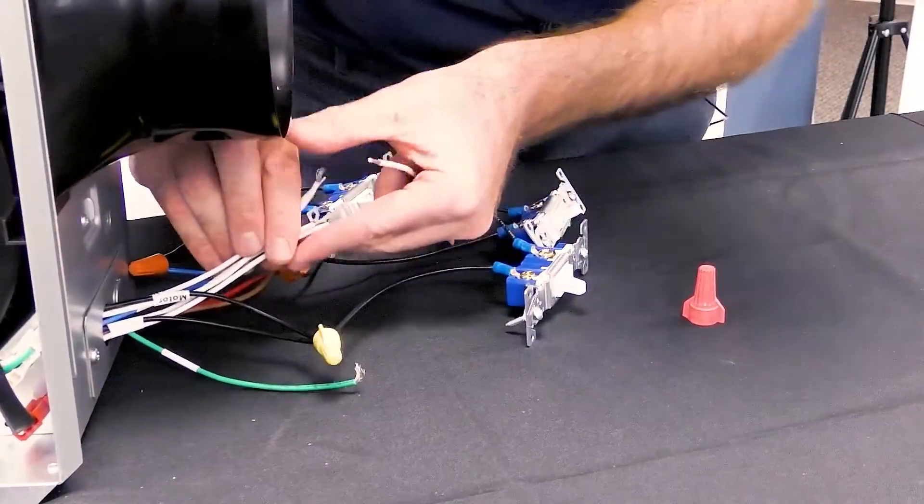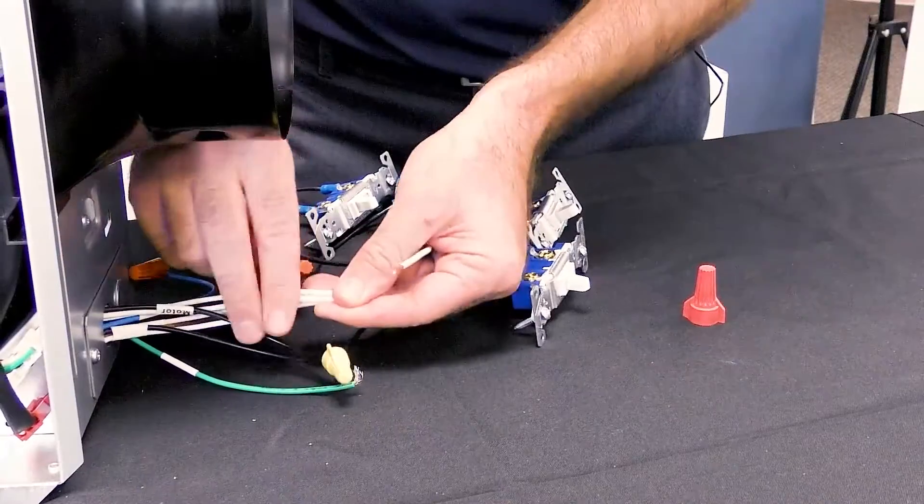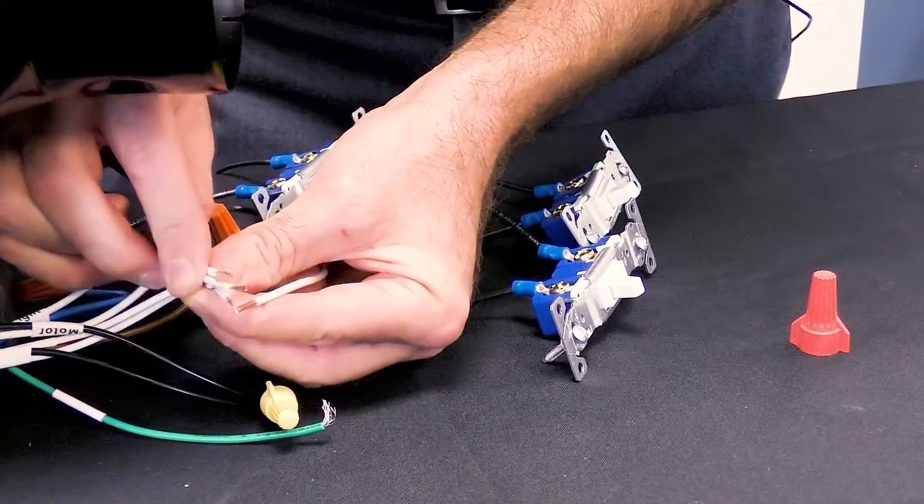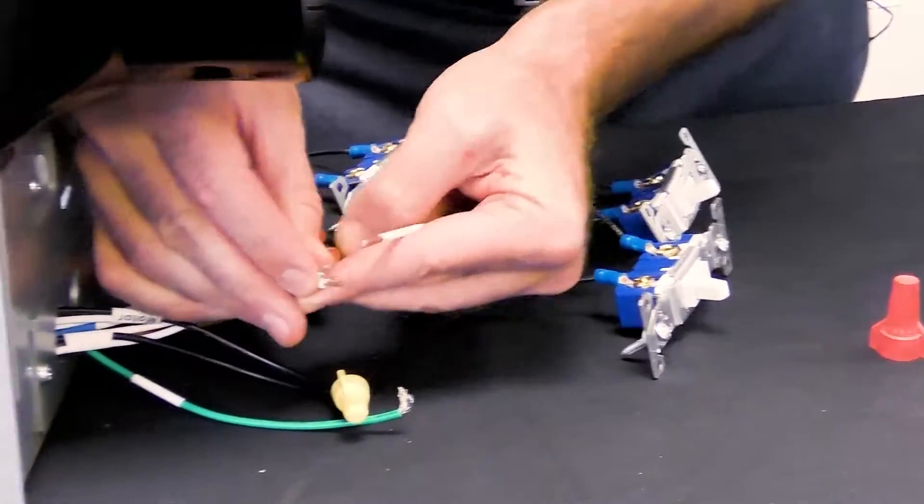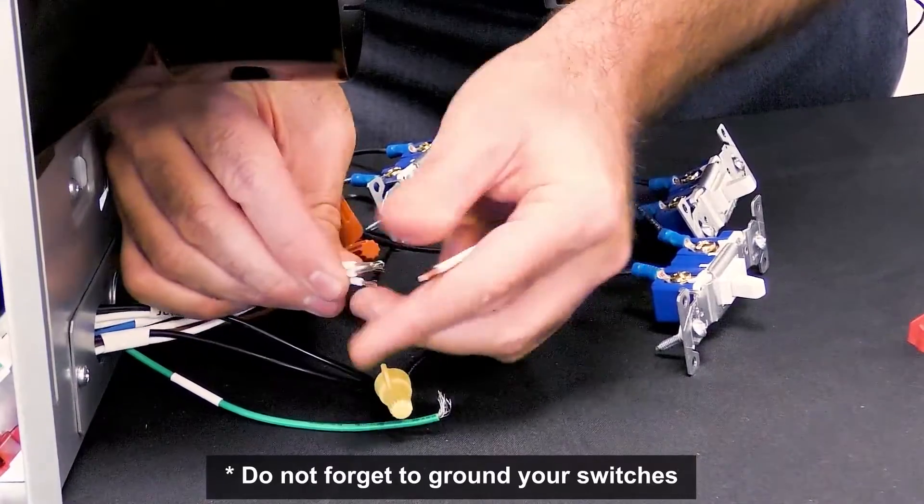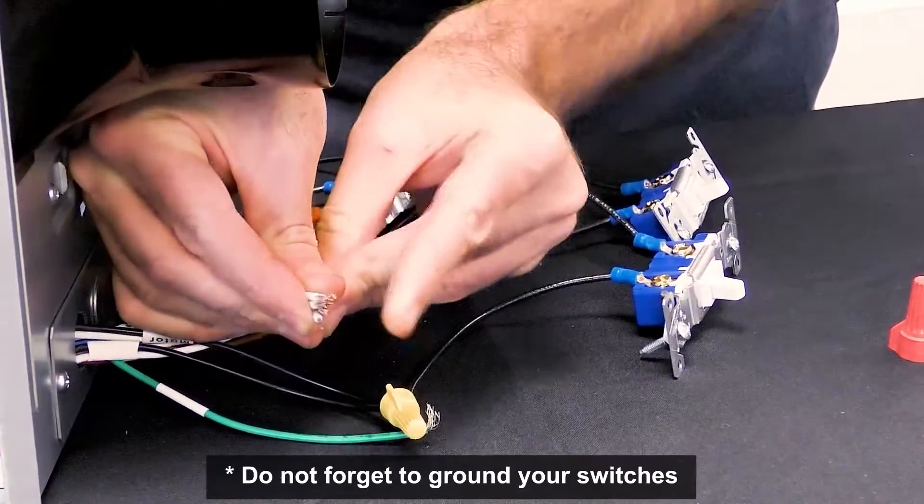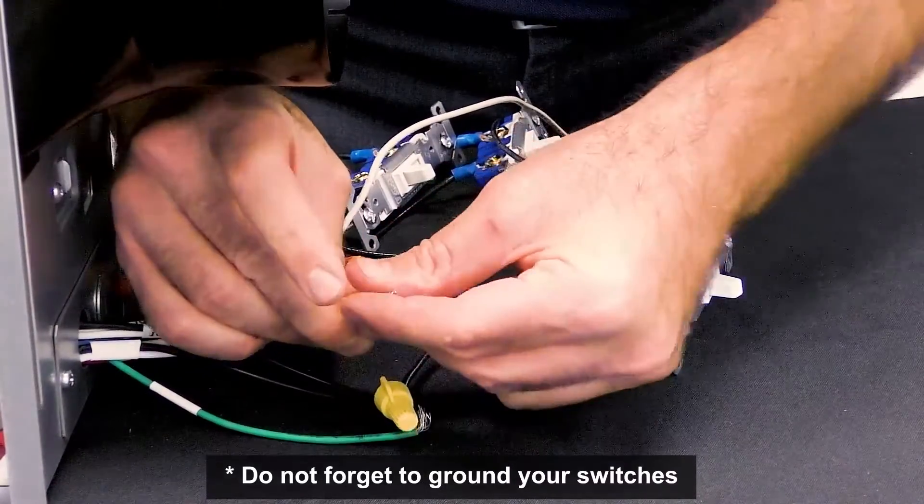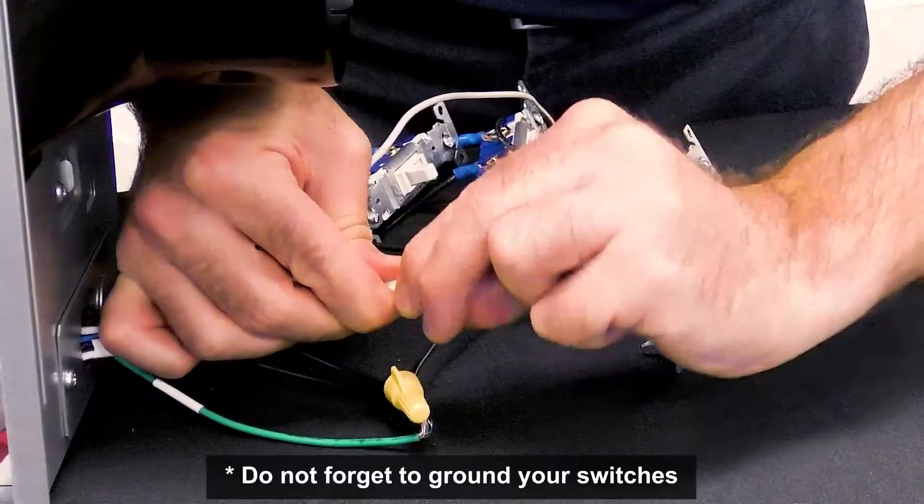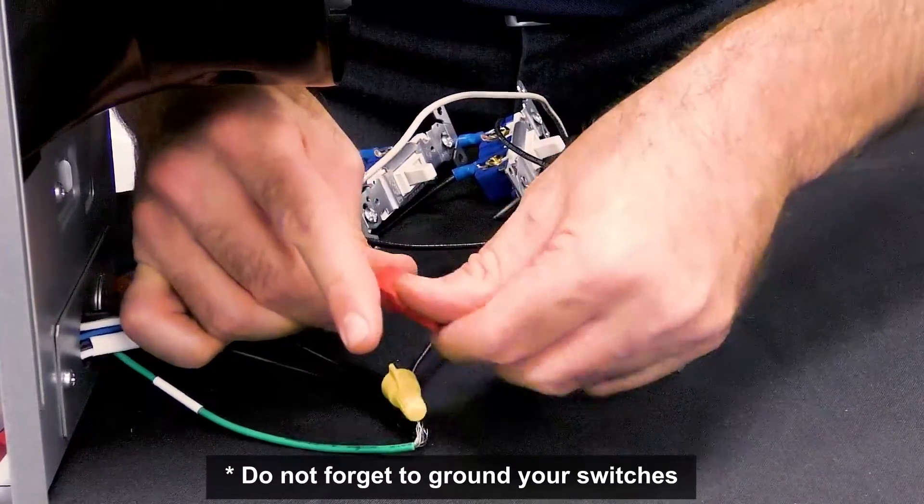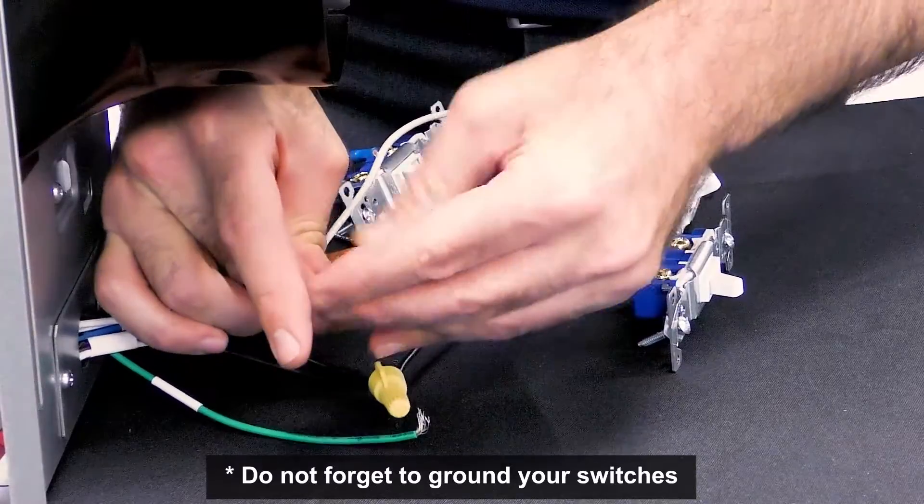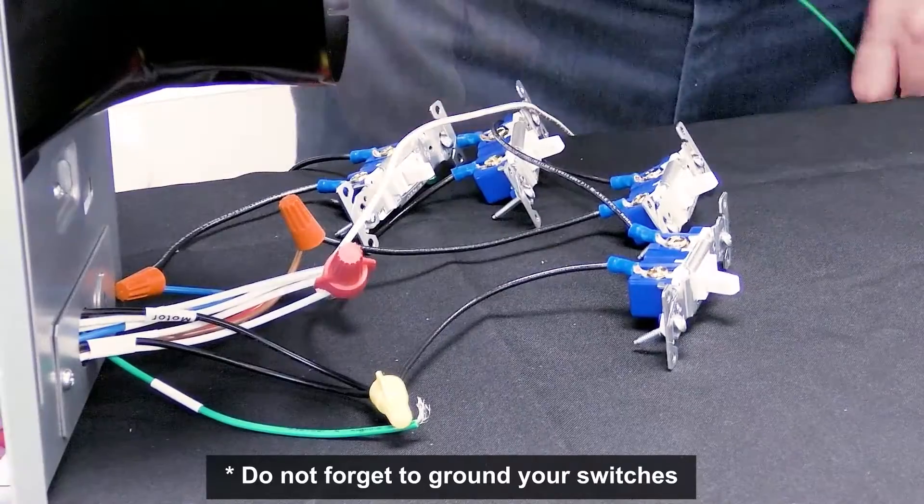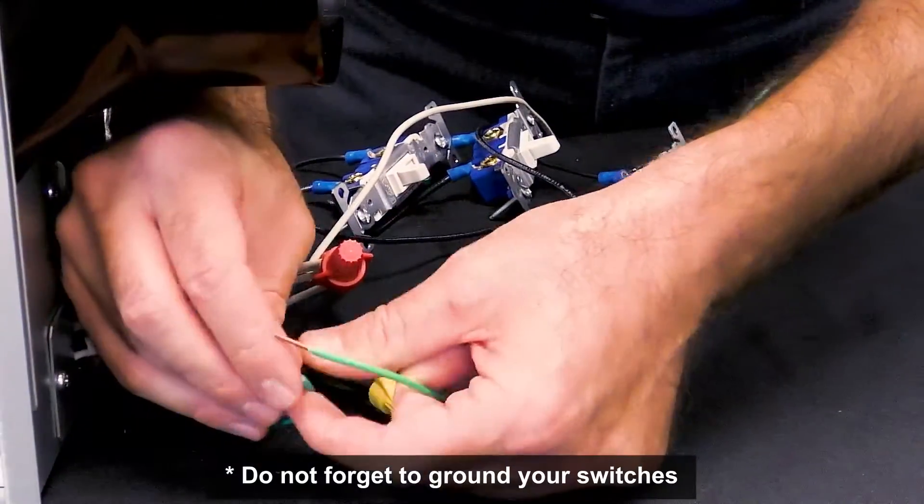You will be left with the white neutral and green ground wires. Take the white neutral wires and wire nut them all together. Lastly, wire together the ground wires.